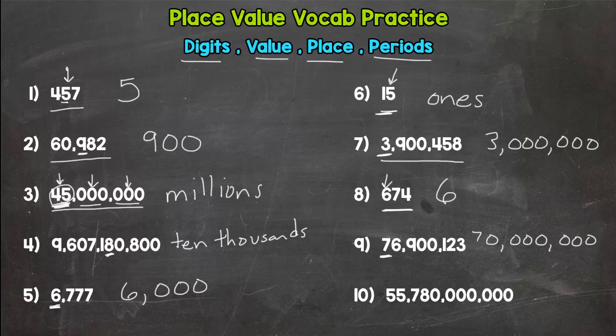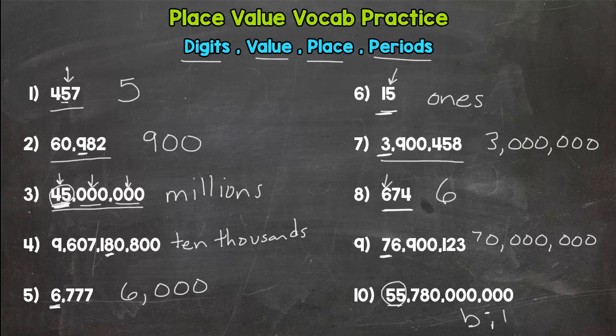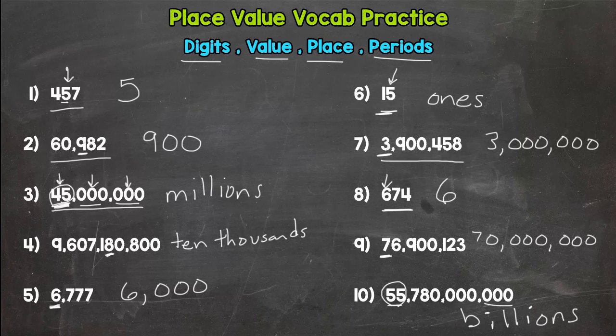All right, last one: what period is this 55 in? What period is that in? And that is the billions period. Billions. Right: ones, thousands, millions, billions.